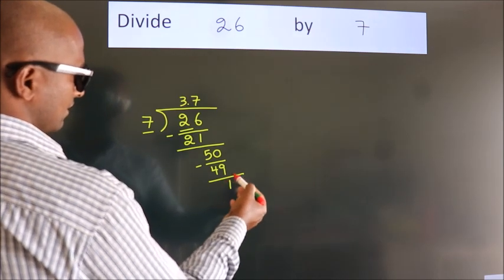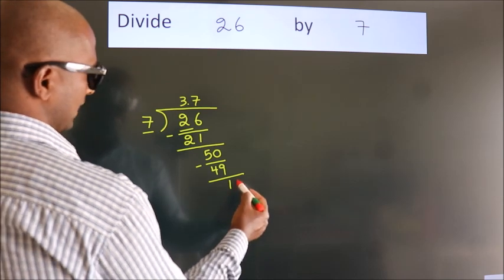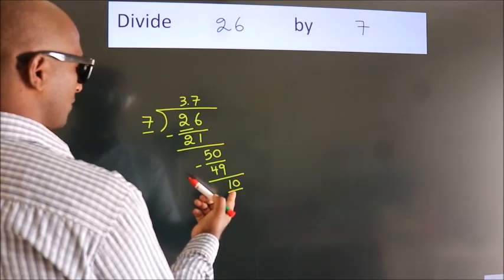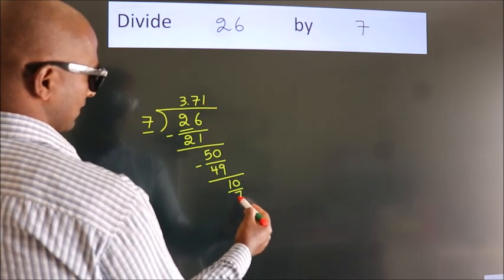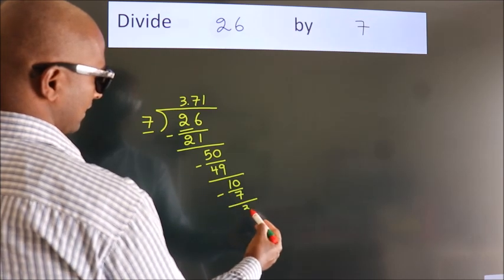After this, we already have the decimal, so directly take 0, giving us 10. A number close to 10 in the 7 table is 7 ones, 7. Now we subtract. We get 3.